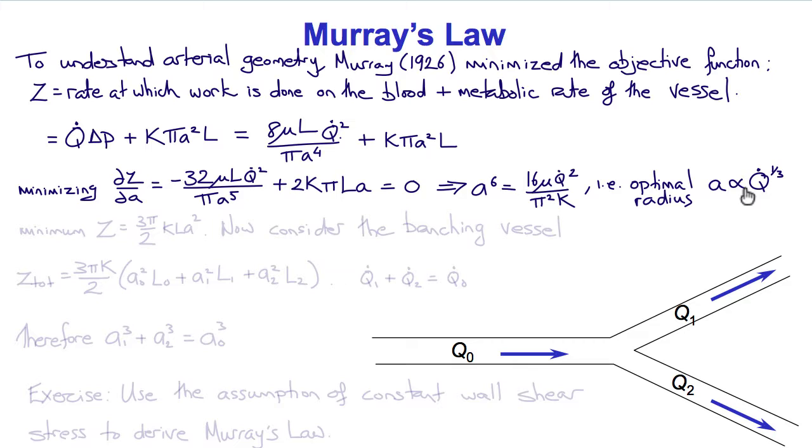And in fact, this is consistent with experimental observations on the relationship between flows and radii in vessels. The minimum value of Z would therefore be proportional to the square of the radius 3 pi over 2 K L A squared. So we can now use this idea to analyze how vessels should branch optimally to preserve this optimal radius.